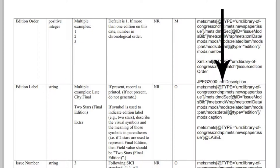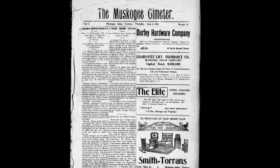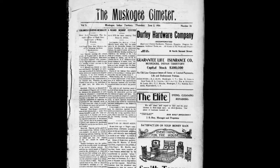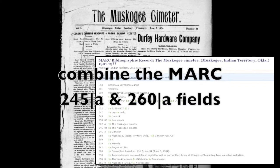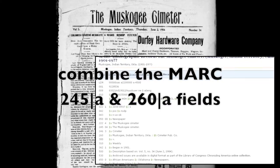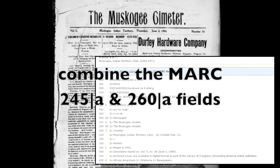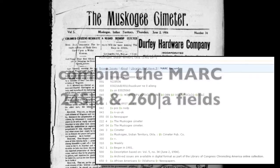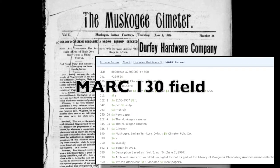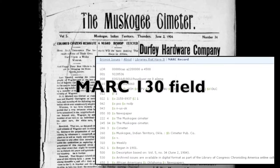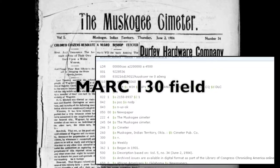For NDNP, you'll want to familiarize yourself with some of the key metadata elements, including title. The title of a newspaper for NDNP purposes is more than what you traditionally think of as a title. The NDNP title is formed by combining the MARC 245 subfield A field with the MARC 260 subfield A field. This is often the same as what's in the MARC 130 field, but since many records don't actually have complete or accurate 130 fields, the spec calls for this combination.